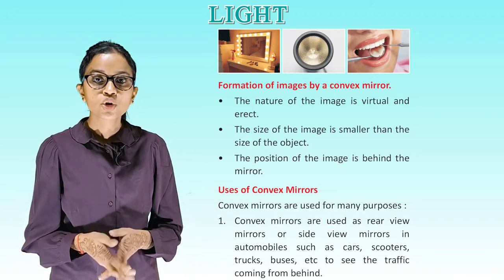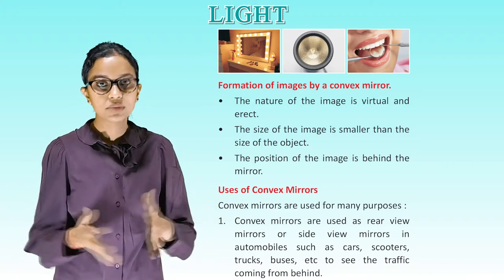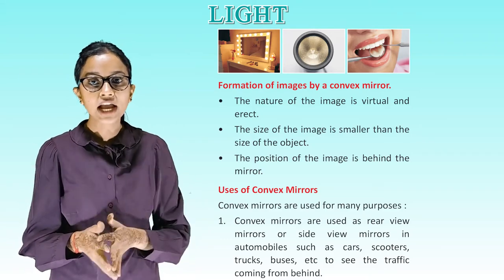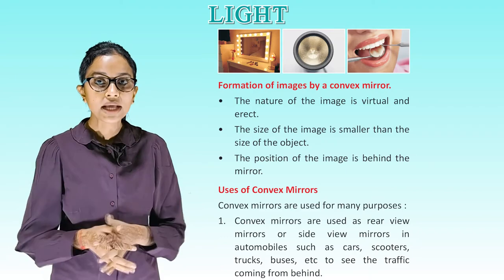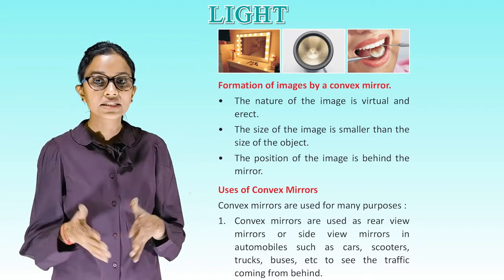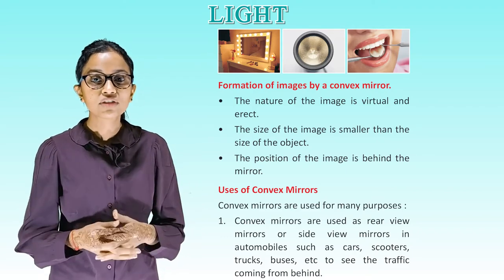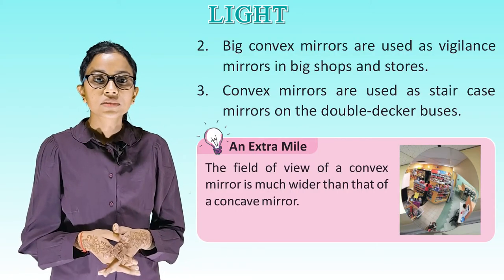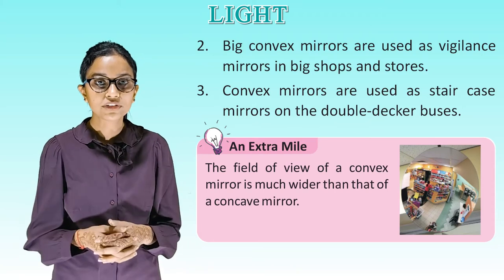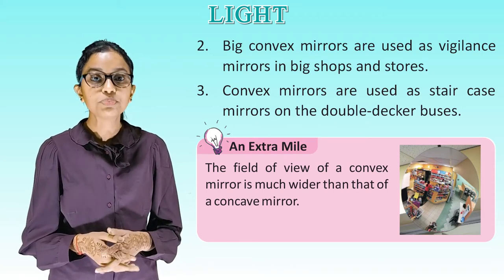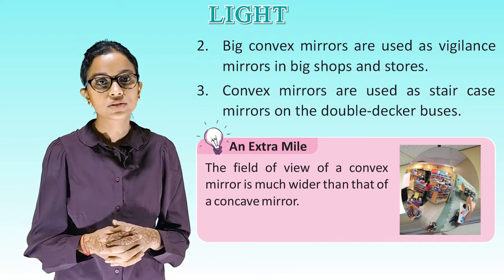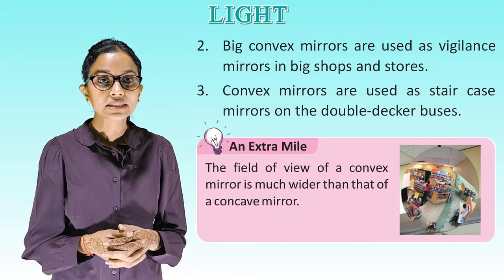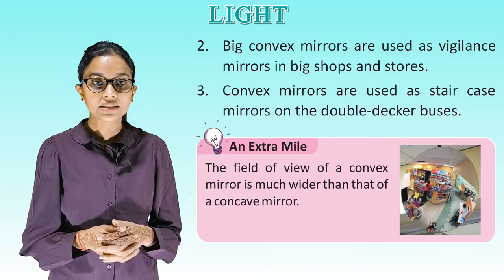Uses of a convex mirror: convex mirrors are used as rear-view mirrors or side-view mirrors in automobiles such as cars, scooters, trucks, buses, etc. to see the traffic coming from behind. Large convex mirrors are used as vigilance mirrors in big shops and stores. Convex mirrors are also used as staircase mirrors on double-decker buses.